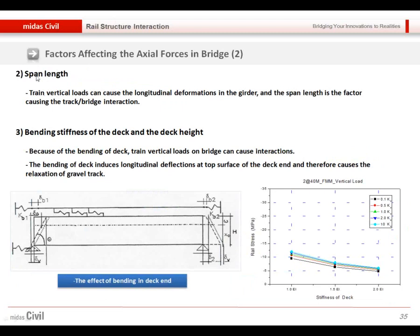The other factor will be the span length and bending stiffness of the deck. So the bending stiffness will be affected by the height of the deck. So if the height of the deck is not enough, we will have large displacement and it can exceed the limitation of our displacement limit, which is 8 mm. So we need to have enough height of the deck for that.